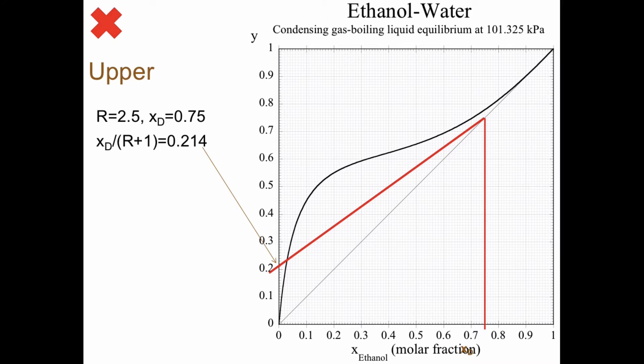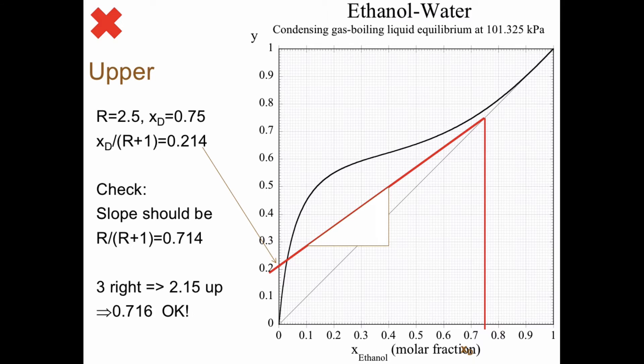And we can check this. The slope should be R divided by R plus 1, and that is 0.714. So let's draw a triangle here. If I take three steps right, I need to take 2.15 up, and that's 0.716. So that's okay.